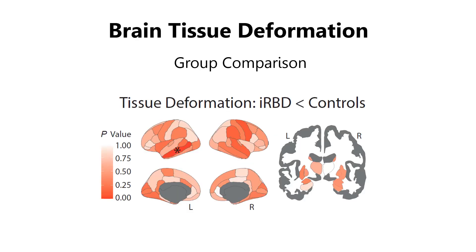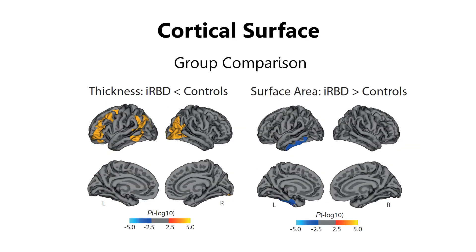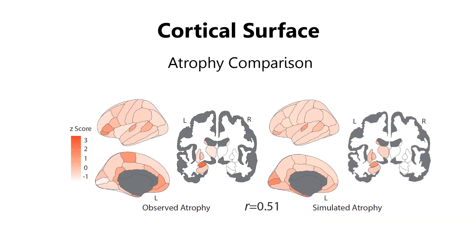Our results show that tissue deformation in isolated RBD is abnormal compared to controls, and that the SIR model was able to recreate this atrophy, correlating at 0.52. We also found that some regions showed cortical thinning and increased surface area in patients compared to controls. The SIR model also significantly recreated the pattern of cortical thickness atrophy seen in isolated RBD, with a coefficient of 0.51, but not surface area.